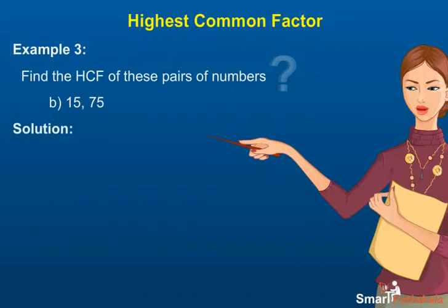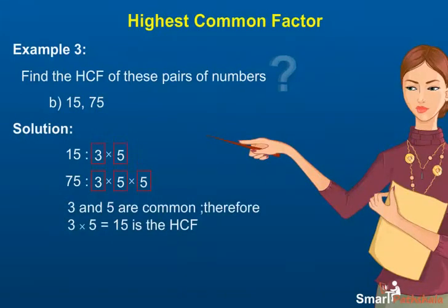B: 15, 75. Solution. 15 equals 3 into 5. 75 equals 3 into 5 into 5. 3 and 5 are common. Therefore, 3 into 5 is equal to 15 is the HCF.